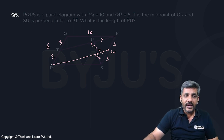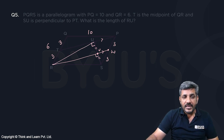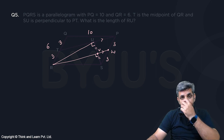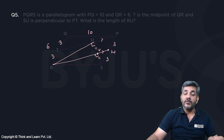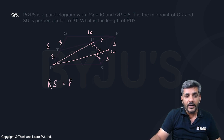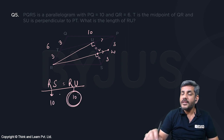In triangle RUS, RV is the median because V is the midpoint, and this median is also the perpendicular. When the median is also the perpendicular, the triangle is isosceles, meaning RS is equal to RU. Since RS is 10, RU is also 10, and that is what the question is asking.